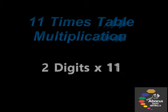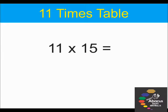Now let's look at 2 digits multiplied by 11. Let's take 15. We take the 1 to the front and the 5 to the back. Next step we will add the 1 and the 5 together, which gives us 6. Our answer is 165.